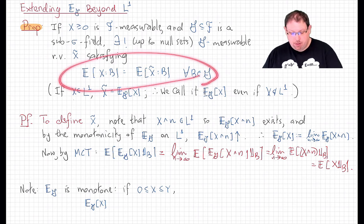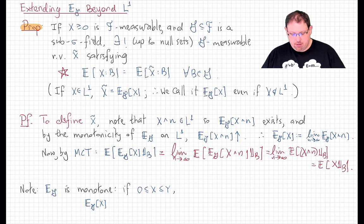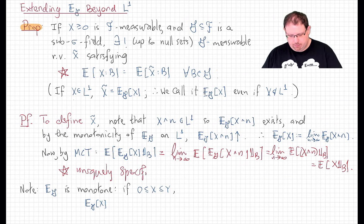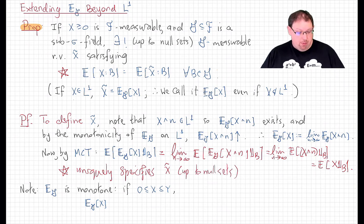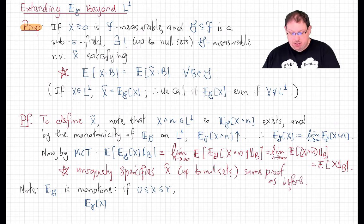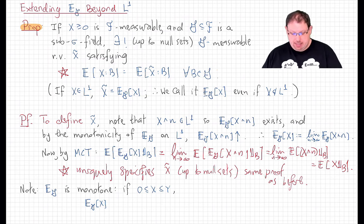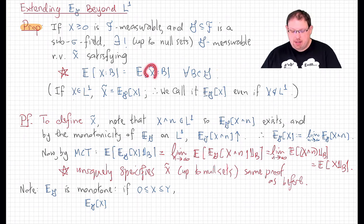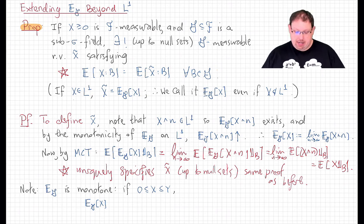That shows this property holds. Uniqueness — that this property uniquely specifies X-tilde up to null sets — follows by the same proof given before: using the Dynkin multiplicative systems theorem, we extend from indicator functions to bounded measurable functions, then take Z minus X-tilde times a cutoff and apply the monotone convergence theorem again. That concludes this proposition.